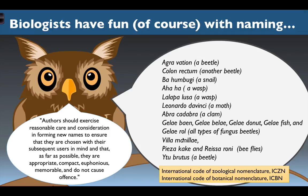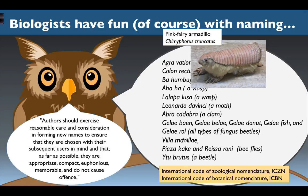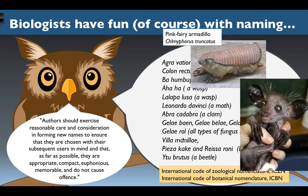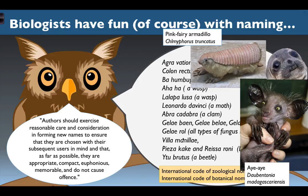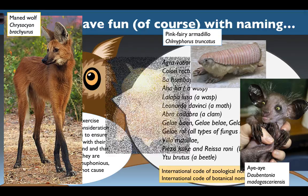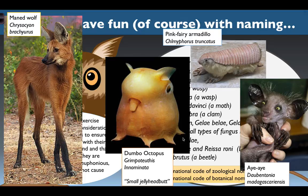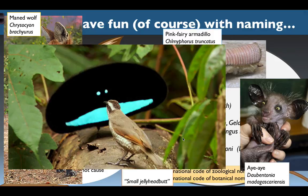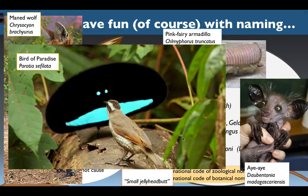For example, the pink fairy armadillo, or Chlamyphorus truncatus — this thing actually exists. There's the aye-aye, the maned wolf with quite extreme characteristics, and the dumbo octopus whose name from Latin means 'small jellyhead butt.' And lastly, one of the most amazing things is what we call the bird of paradise, or Parotia sefilata, doing its elaborate dance to woo a female. This gives us the ability to look with a light heart at nature.